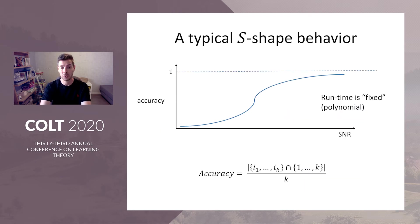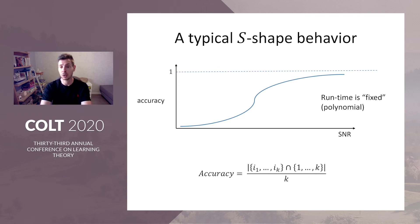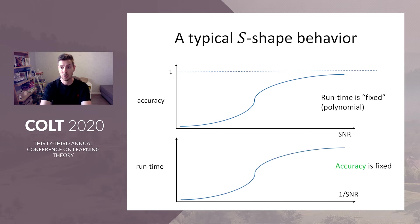However, all those polynomial time algorithms have the following undesirable behavior: as the SNR decreases and the problem becomes harder, the accuracy diminishes as well. Now this is to be expected because this is an NP-hard problem, so we cannot expect a polynomial time algorithm to maintain a fixed high accuracy for all instances. But in many cases what we want is a fixed accuracy — a guarantee, a lower bound, say at least 90% of the signal is always recovered.